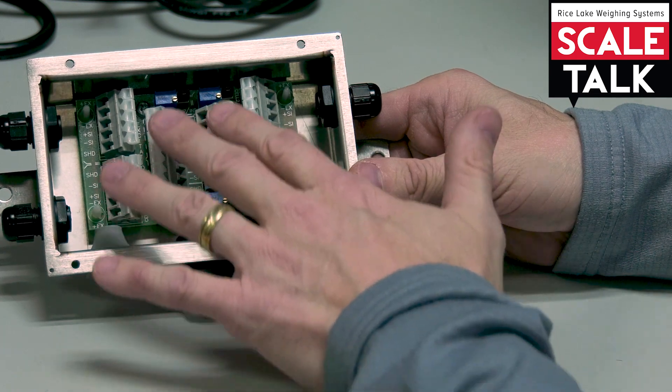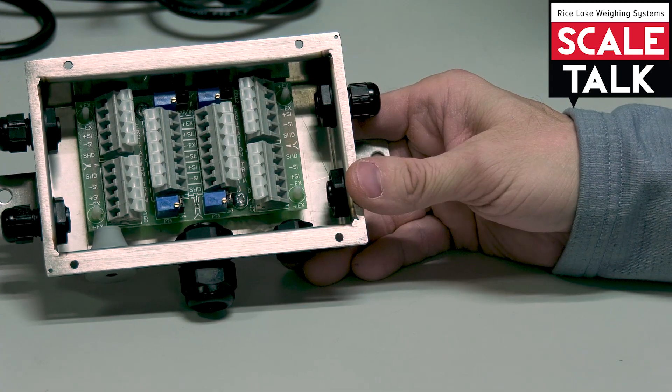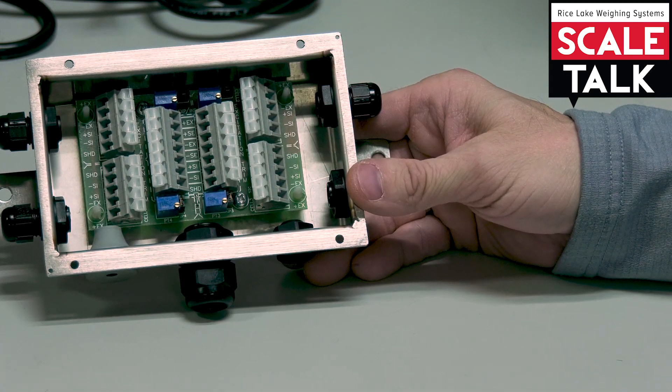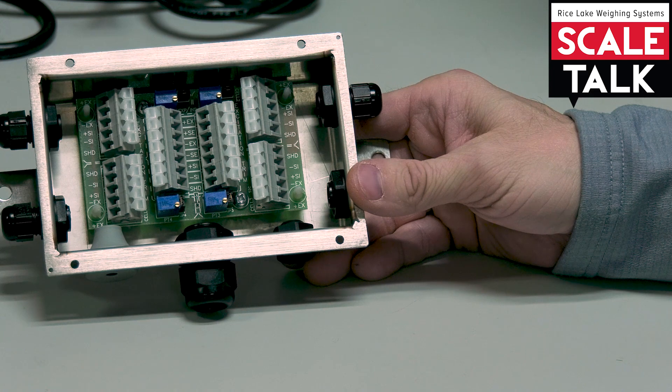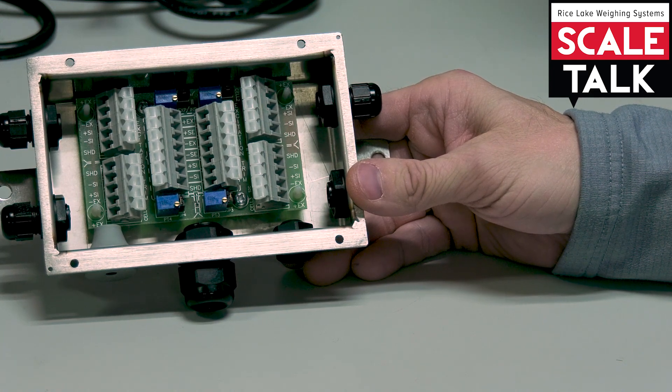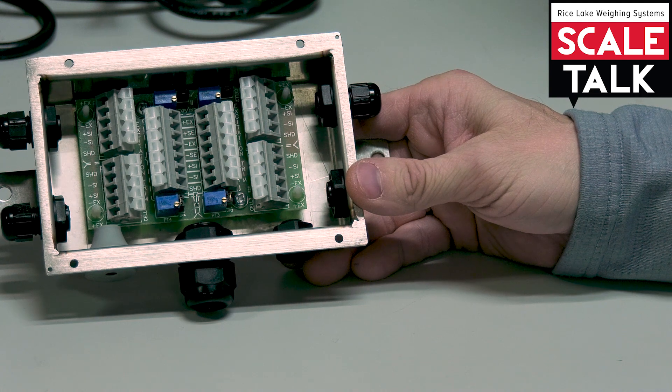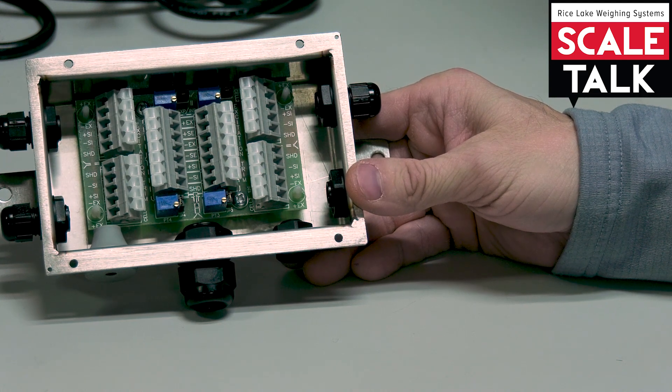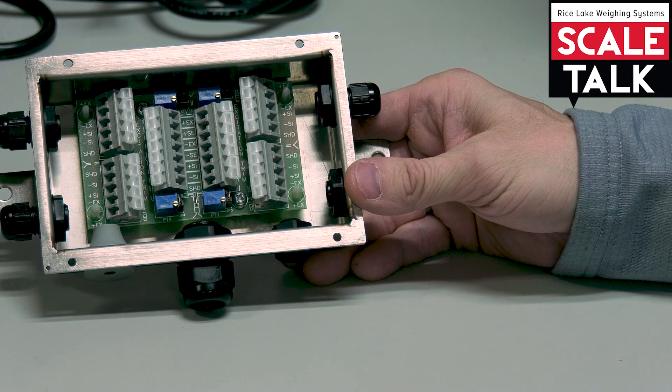And so these potentiometers, the little blue blocks here that are found on that J-Box board, allow me to trim off those differences from cell to cell and create that same signal-to-weight ratio so that no matter where I place the weight on the scale, I'm able to see the exact same weight as I expect.